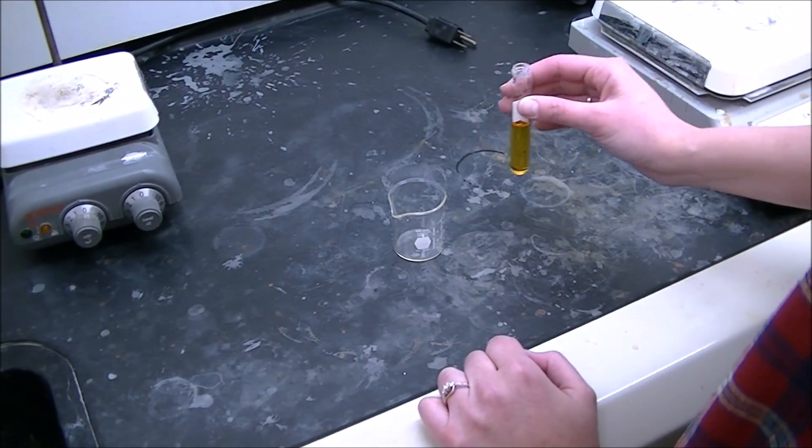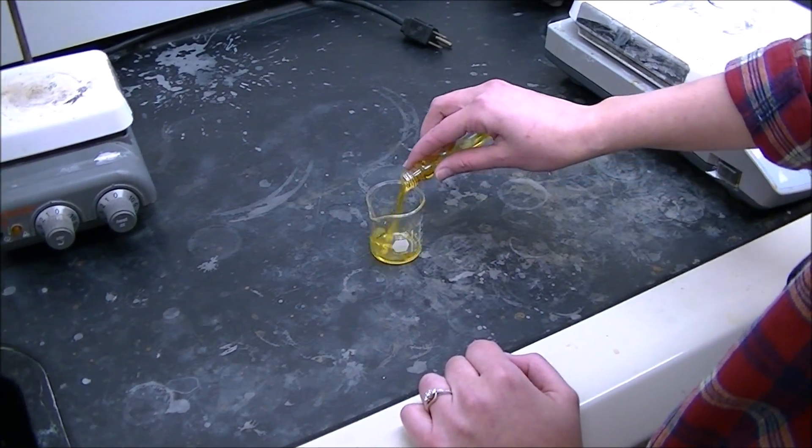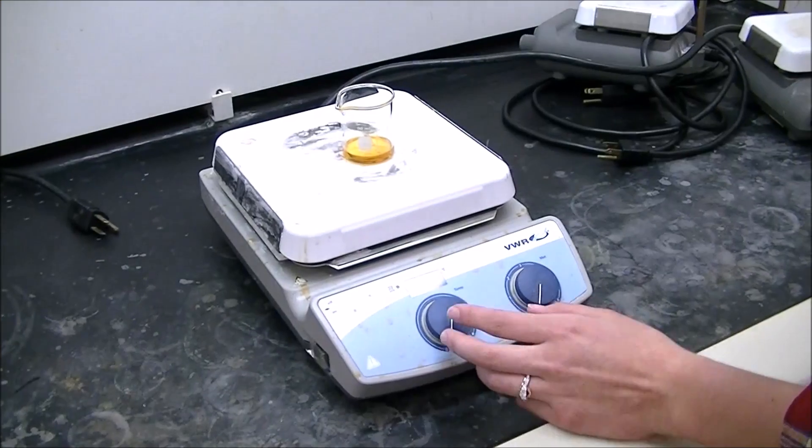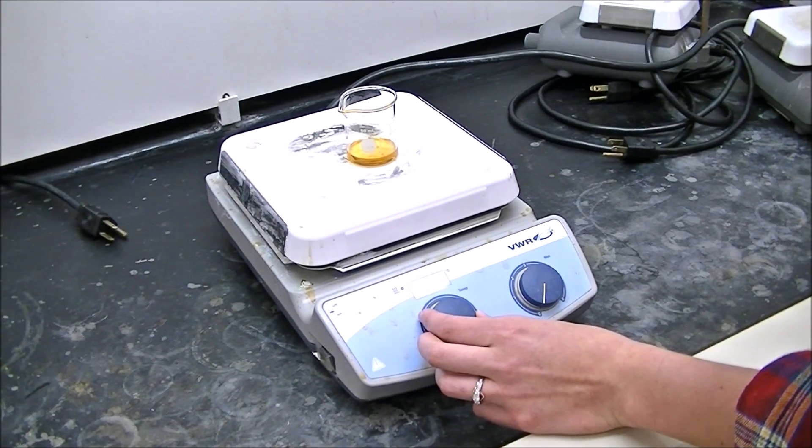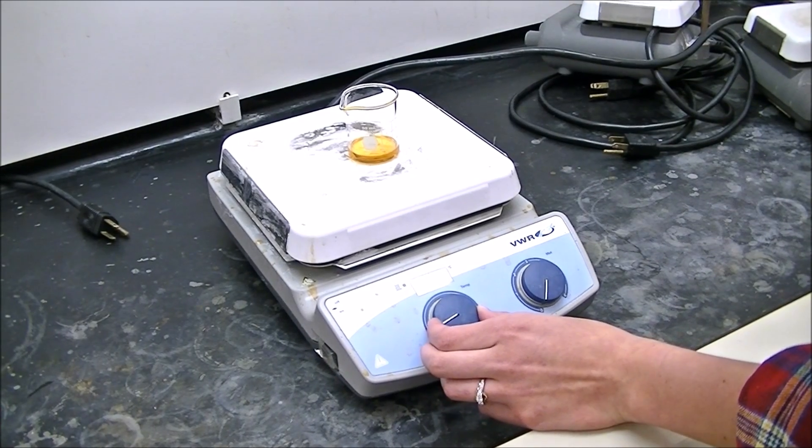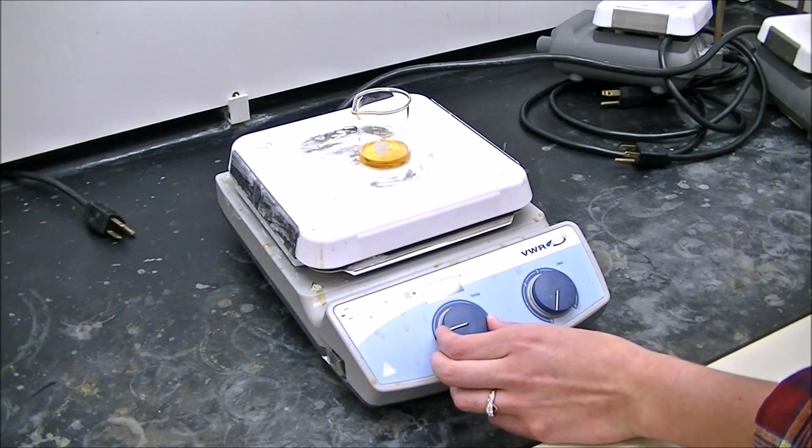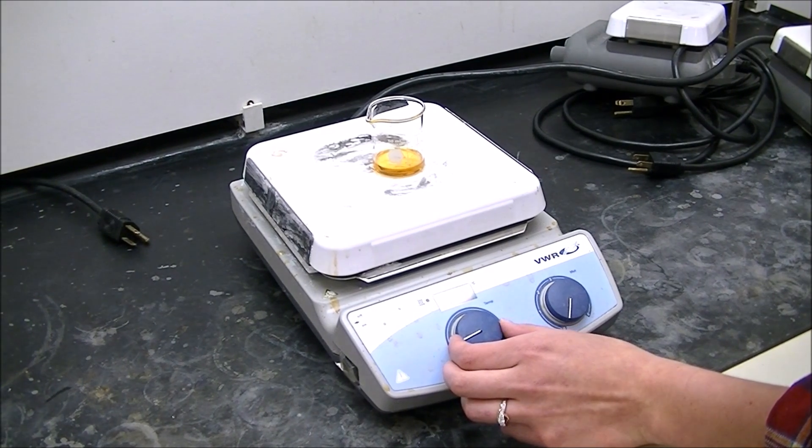Add your azobenzene mixture to a beaker. Boil off nearly all of your methylene chloride under the hood. Remember that methylene chloride has a low boiling point and you'll need to be careful as you reach low volumes.